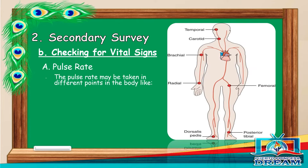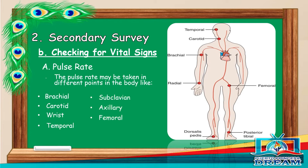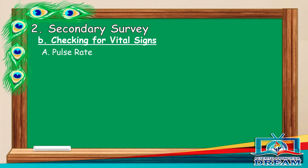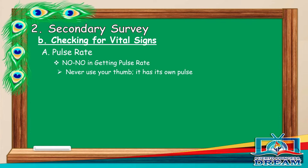The pulse rate may be taken in different points in the body like brachial, carotid, wrist, temporal, subclavian, axillary, and femoral. No-nos in getting pulse rate: never use your thumb — it has its own pulse.